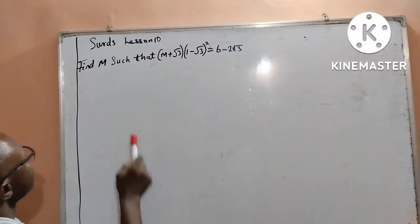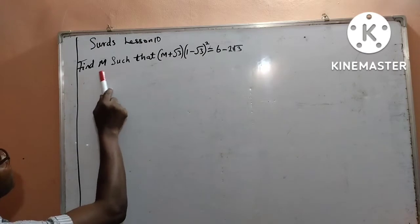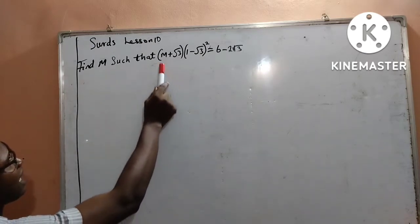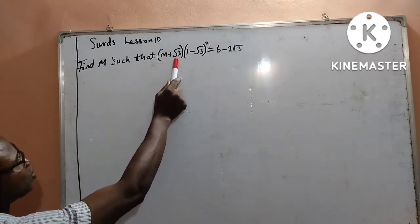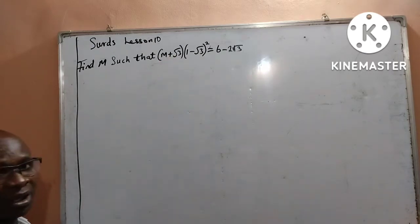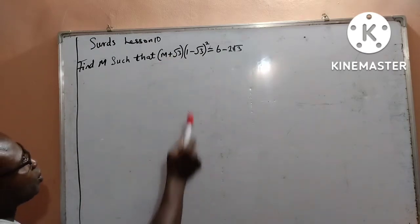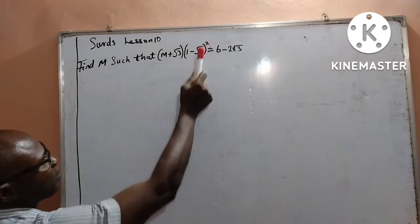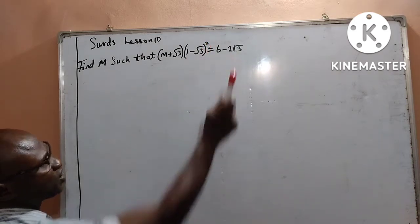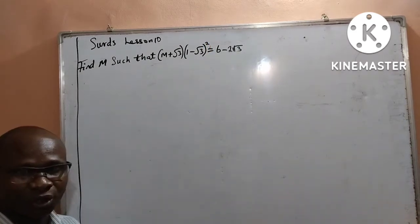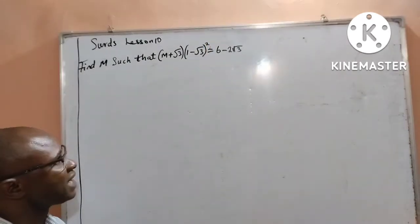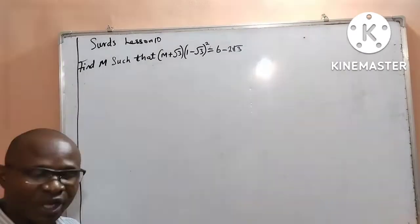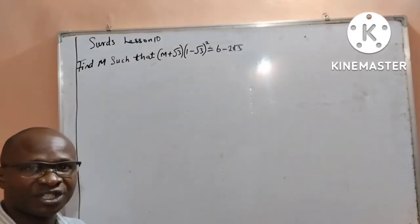In this class, we are asked to find m such that m plus root 3, into 1 minus root 3, raised to the power 2, is equal to 6 minus 2 root 3. Let us solve it.